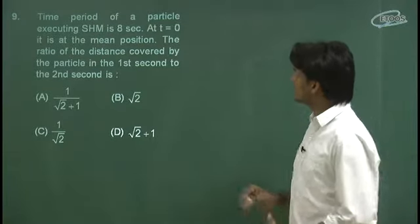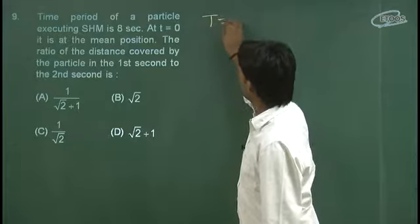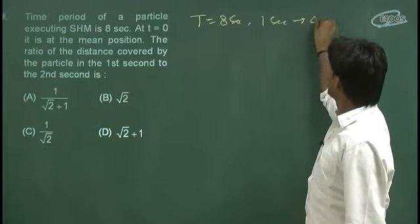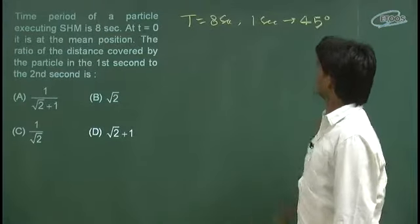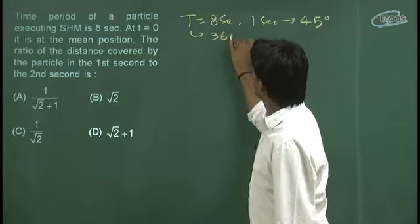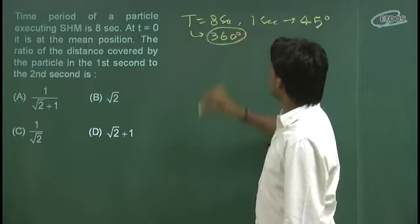Question me kya bola gaya hai? Is ne bola hai ki ek particle hai, jis ka time period kitna hai? 8 second. Yani ki ek second me wo kitne degree travel karta hoga? 45 degree. Kyunki T ka matlab kya hua? Is ka matlab hua ki 360 degree travel karne ka time.